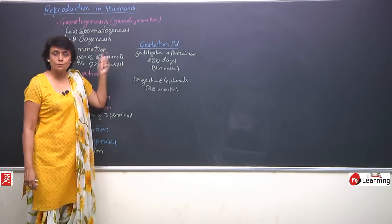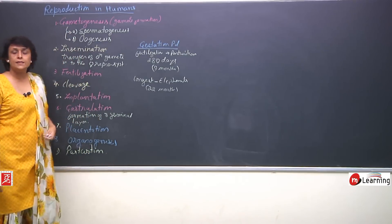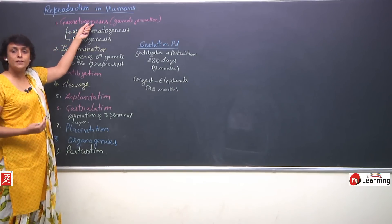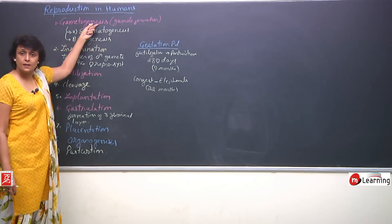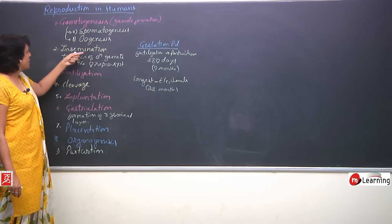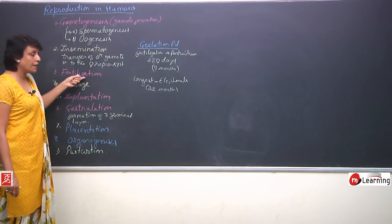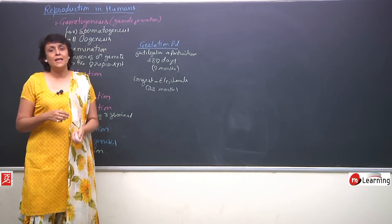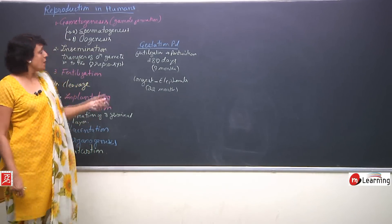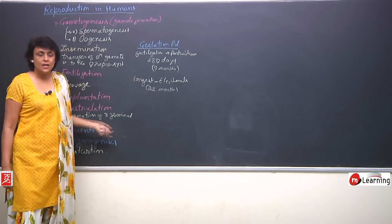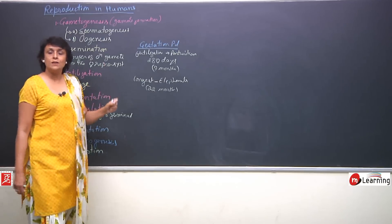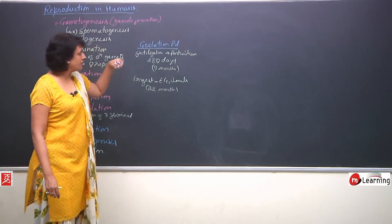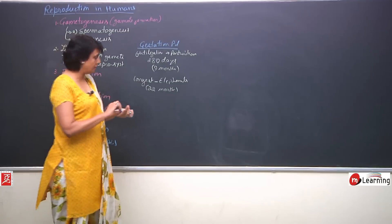Now, before we take up all these steps in details, we need to know where are these actually taking place. Where does spermatogenesis, oogenesis take place? Where does insemination take place? Fertilization site, how cleavage? That means we need to understand the male and the female reproductive systems first before we can even start with these things. So, first let us talk about the male reproductive system, then female reproductive system and then we will start with gametogenesis. So, let us talk about male reproductive system first.